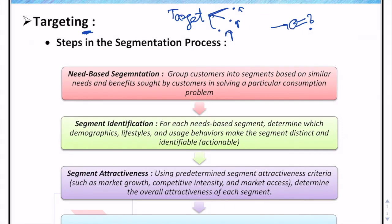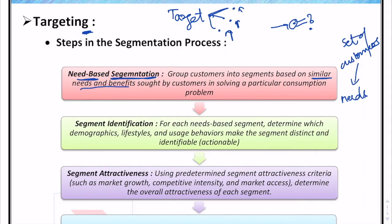Let's start with the process of targeting. The marketer has to divide the target audience into various need-based segments — looking at the entire target audience and evaluating the set of customers who have similar needs, and then grouping customers into segments based on similar needs and benefits.